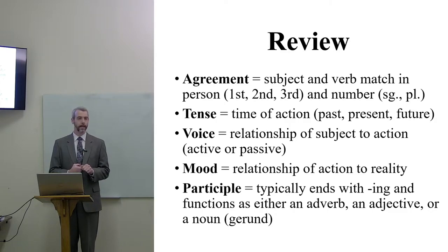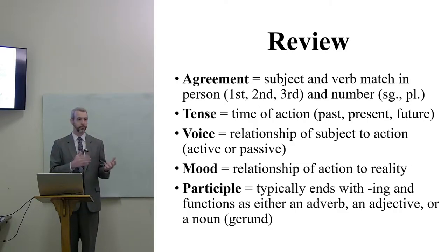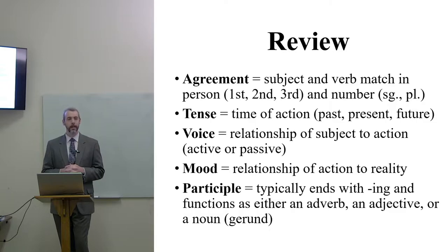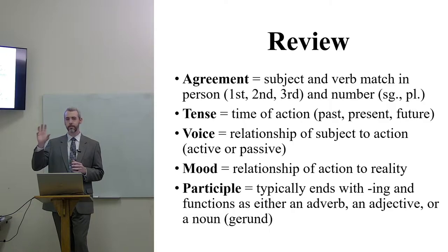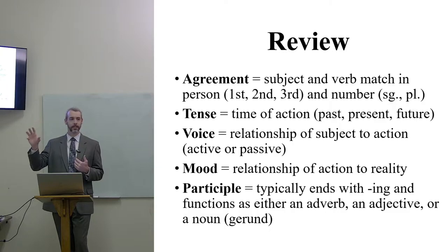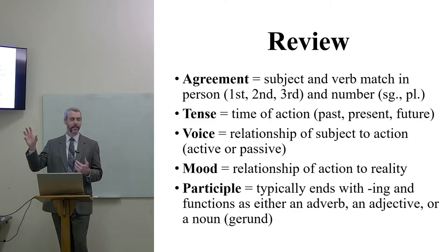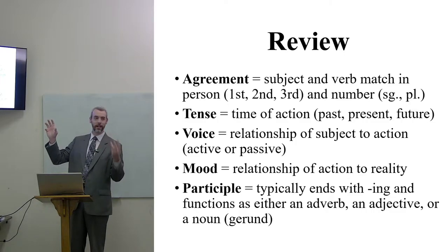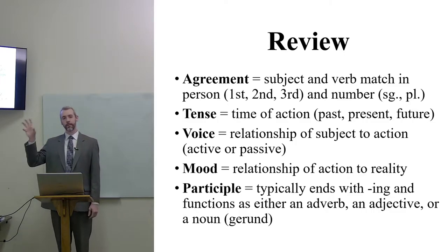Agreement: the subject and the verb are going to match in person and in number. That's why we sometimes change how the verb looks — we're agreeing with the subject of the verb, whether it's I, you, or he, she, or it. When we talk about first, second, and third person: first person singular is 'I,' second person singular is 'you,' third person singular is 'he,' 'she,' or 'it.' There we see masculine, feminine, and neuter in English.